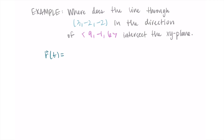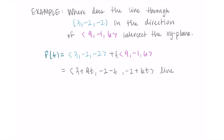To get the equation of the line, I use r equals the vector (3, -2, -2) plus t times the vector (9, -1, 6). Combining into one vector: the x-component is 3 + 9t, the y-component is -2 - t, and the z-component is -2 + 6t. This is the vector equation of the line.